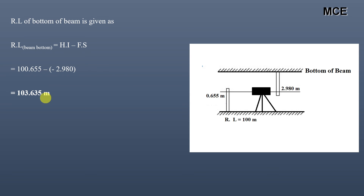In summary, you simply add the back sight and account for the inverted foresight to get the reduced level of the bottom of the beam. In this video you learned how to find the reduced level of a point which is above the line of sight of the instrument using an inverted staff reading. In the next video we will learn how to make the leveling table when we have multiple inverted staff readings. Thanks for watching — if you find this video helpful, please subscribe to the channel and share this video.